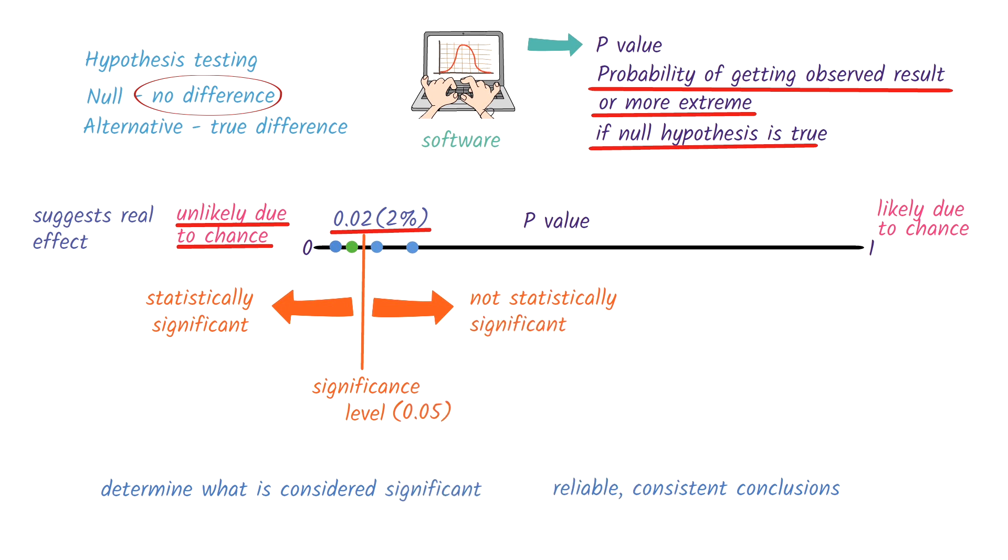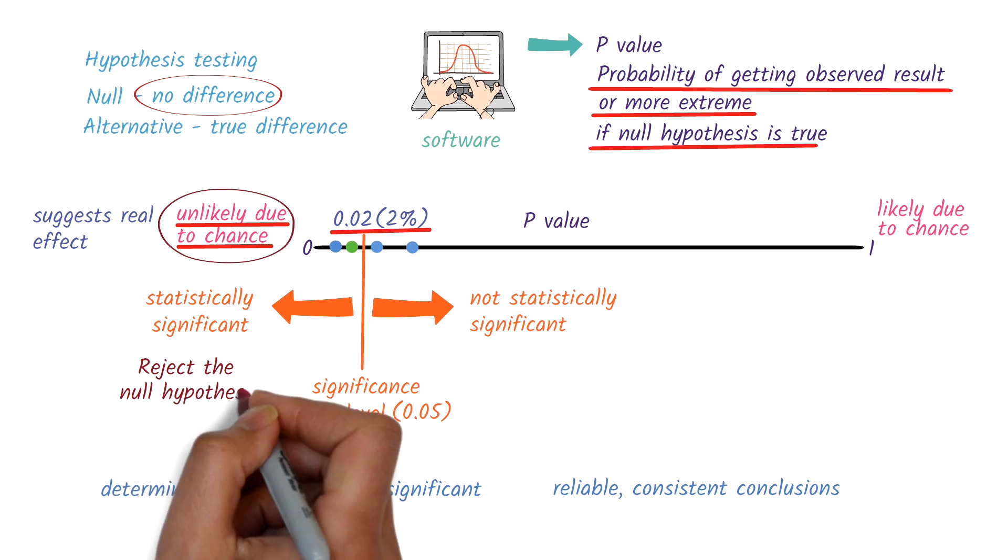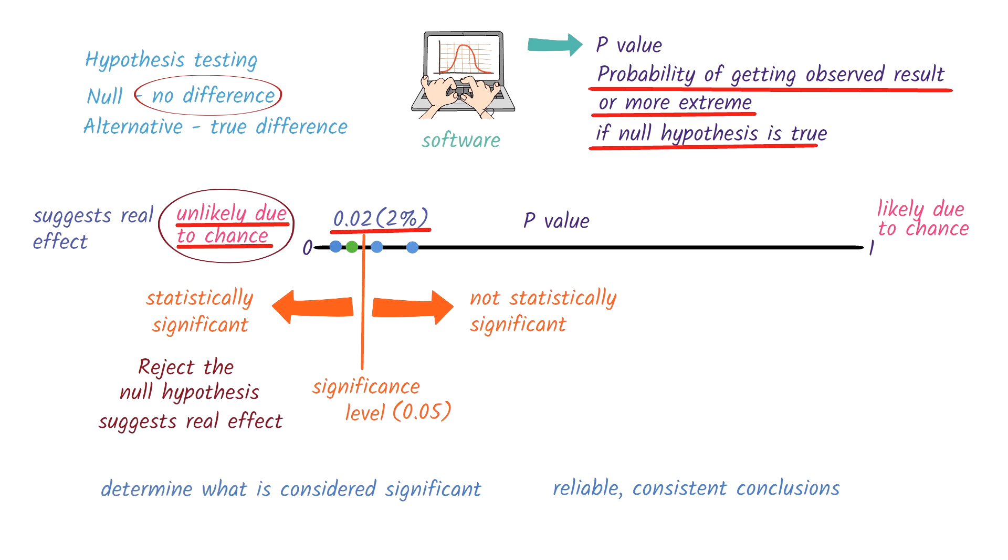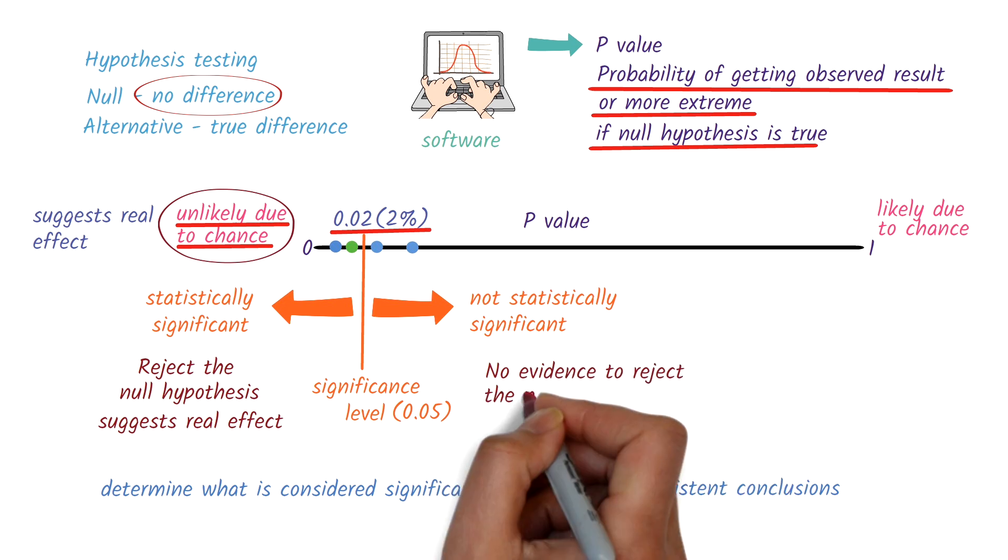Statistically significant means that the result is unlikely to have occurred just by chance if the null hypothesis were true. Therefore, we reject the null hypothesis. This suggests that the drug being tested has a real effect. Not statistically significant means that the result could reasonably have been due to chance, and there's not enough evidence to reject the null hypothesis.